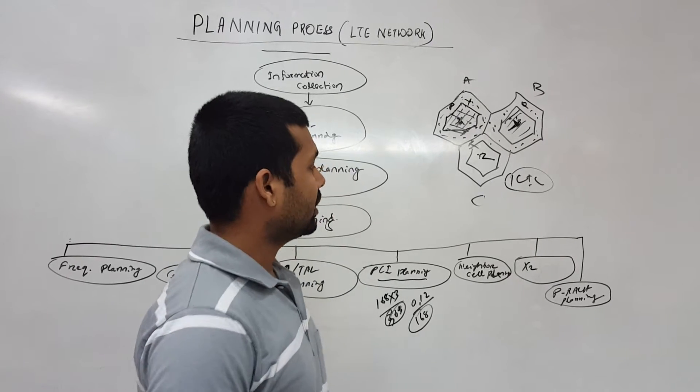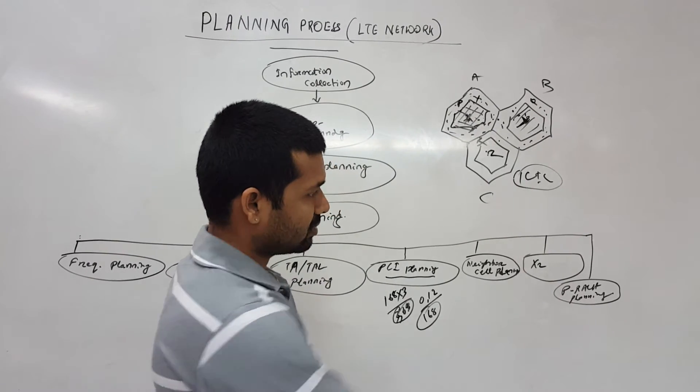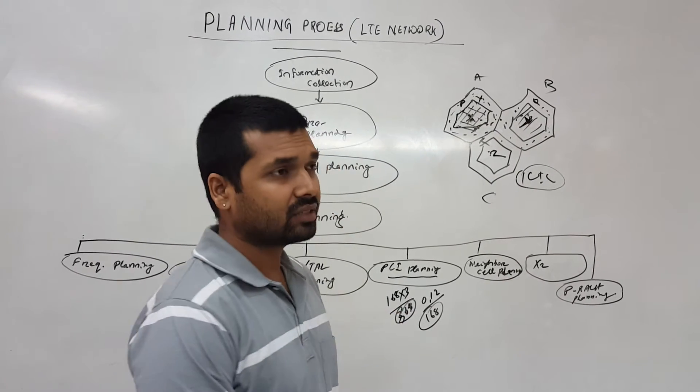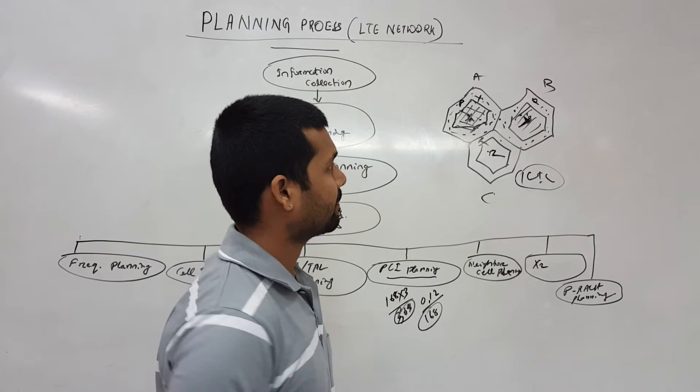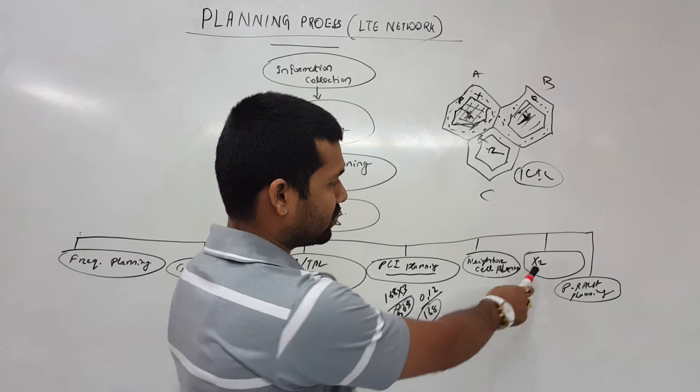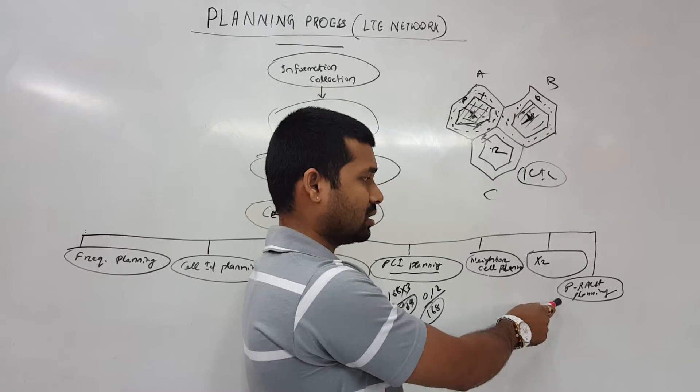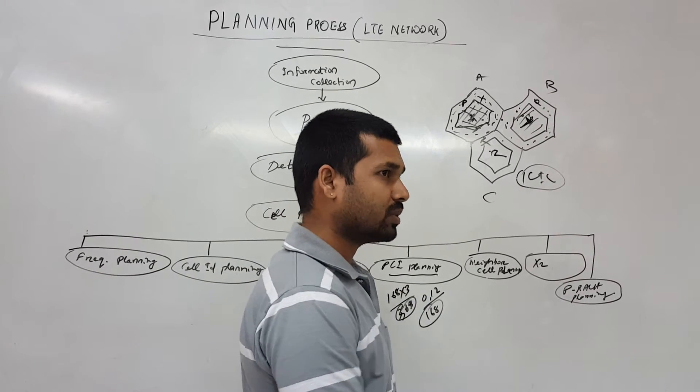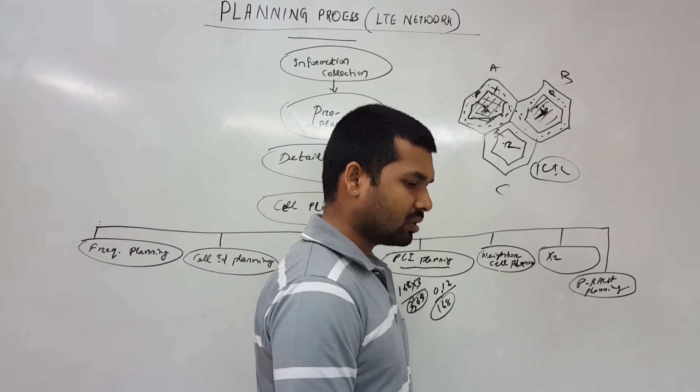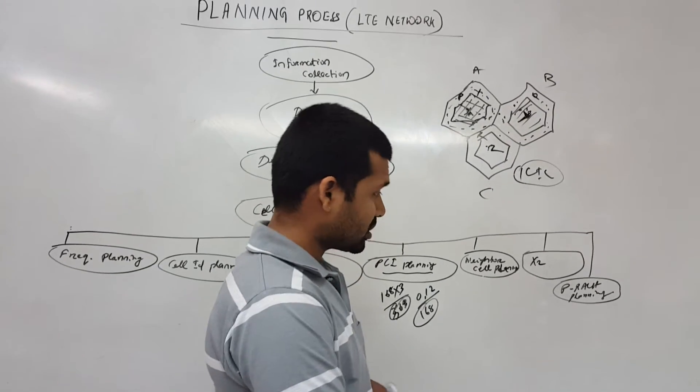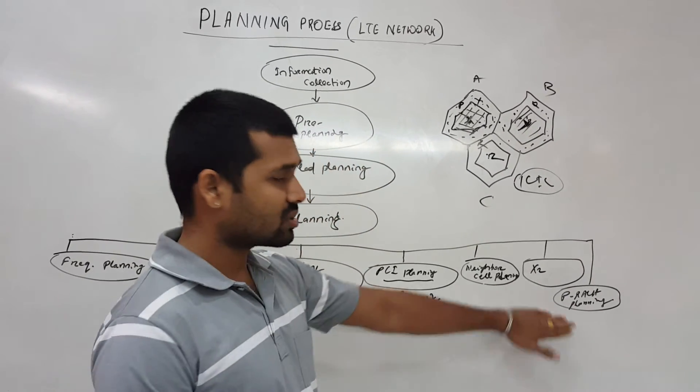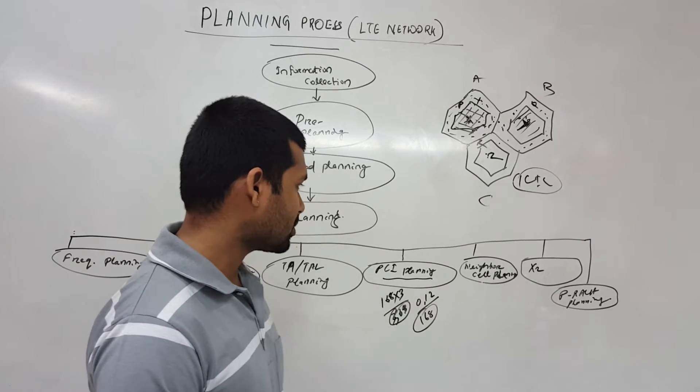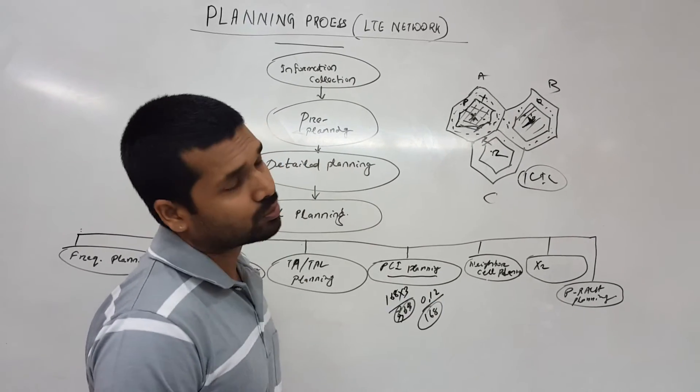Then we'll have the X2 planning, the interface planning. Once we do the neighbor planning, we do this. Then we are having this P-RACH planning, and P-RACH we need to plan the root sequence and other stuff. So that we'll see detail in a different session.